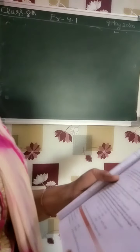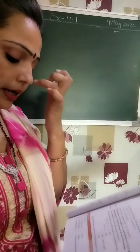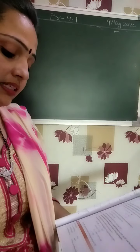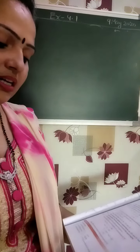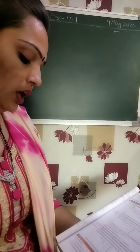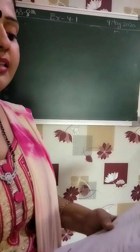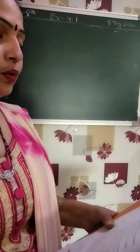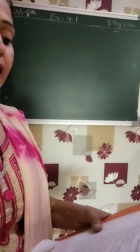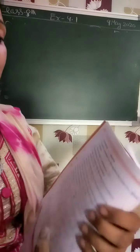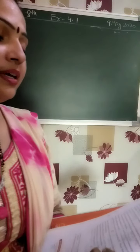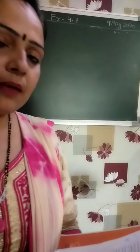Now we start the exercise. In Exercise 4.1, your first question is fill in the blanks. A quadrilateral has 4 sides, 4 angles, and 4 vertices — no three of which are collinear. A quadrilateral has 2 diagonals. A diagonal of a quadrilateral is a line segment that joins two opposite vertices. The sum of the angles of a quadrilateral is 360 degrees.